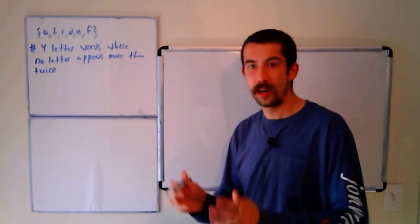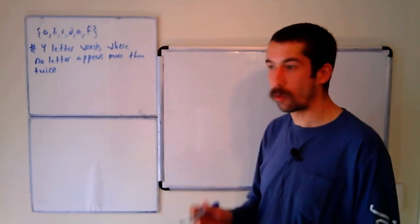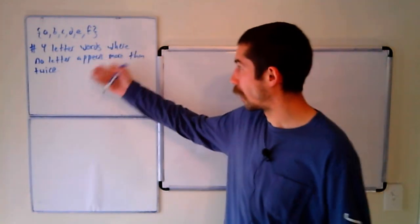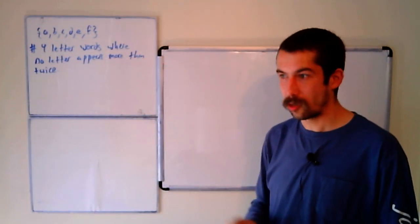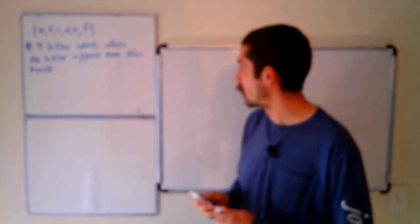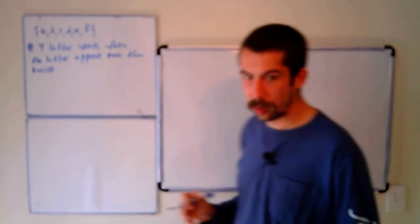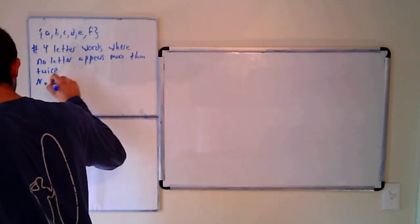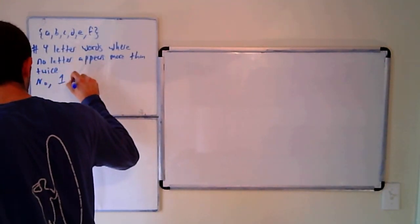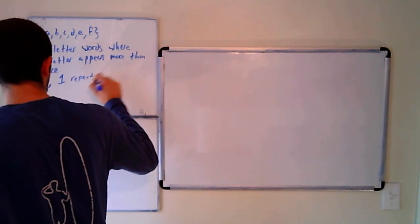the way I solve the problem is I broke it up into three cases. The cases are no repeats, so each letter that appears appears exactly once, one repeat, so there's one letter that appears twice, and then two repeats.